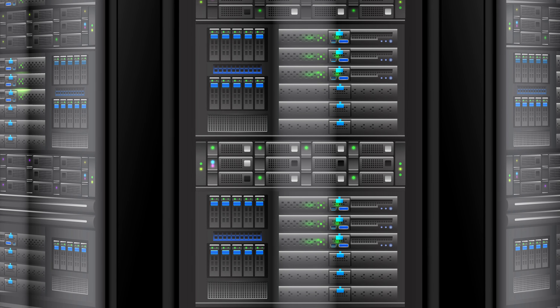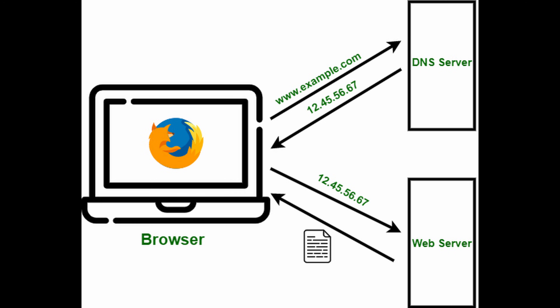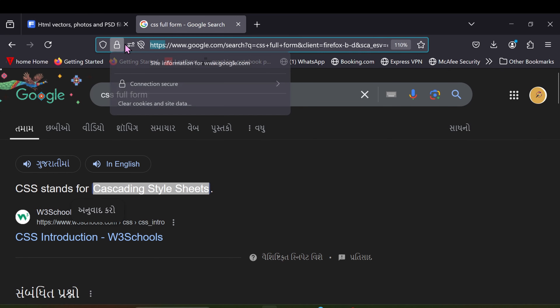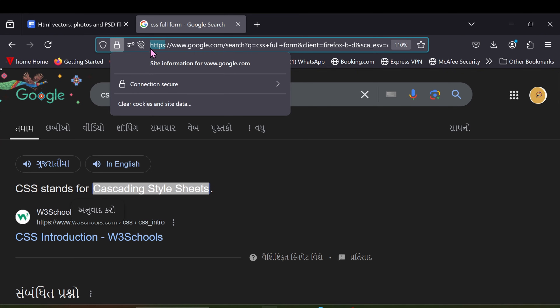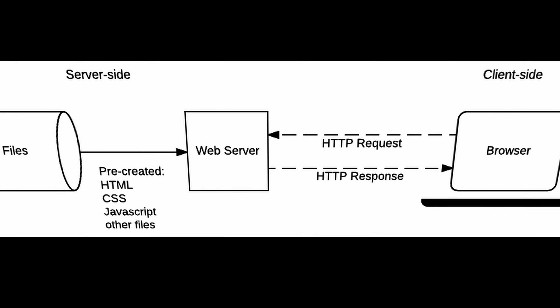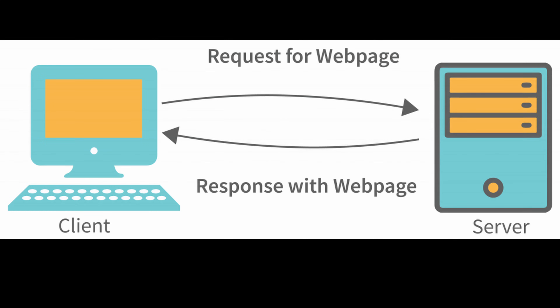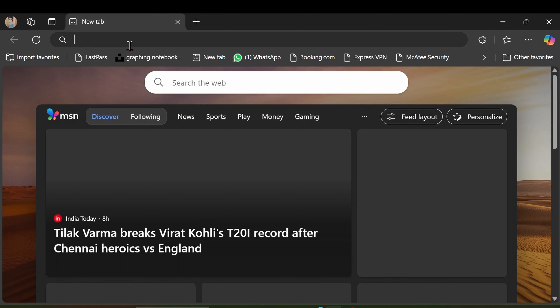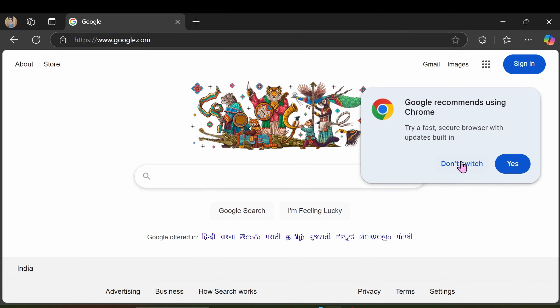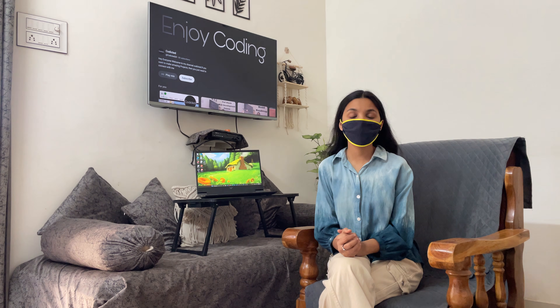For example, www.google.com is converted to a numeric IP address like 142.250.x.x. These IP addresses help locate the server where the website is stored. After this, the browser sends a request to the server using HTTP or HTTPS protocol — the rules that allow the browser and server to communicate. The server receives and processes the request, and sends back the web page's HTML code, images, and videos, which the browser then displays.